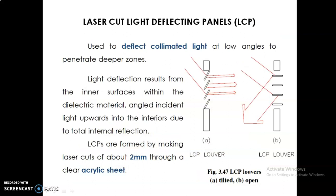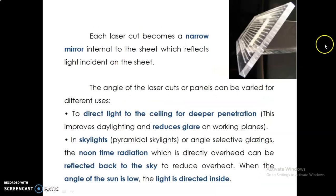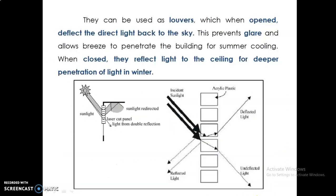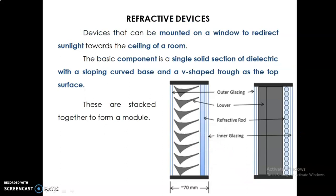Next are laser cut light deflecting panels, which are 2mm acrylic sheets with individual louvre systems. These panels deflect and reflect light to interior spaces, helping penetrate light deeper inside individual spaces and reducing glare, as harsh light is reflected back to the outdoor area. This can be installed in windows as well as in skylights or roof area systems.